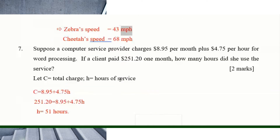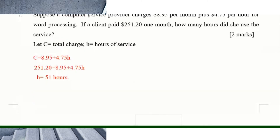Number seven: a computer service provider charges $8.95 per month plus $4.75 per hour for word processing. A client paid $251.20 one month. The total charge c equals 8.95 plus 4.75h. Set that equal to 251.20 and solve for h to find the number of hours she used the service.